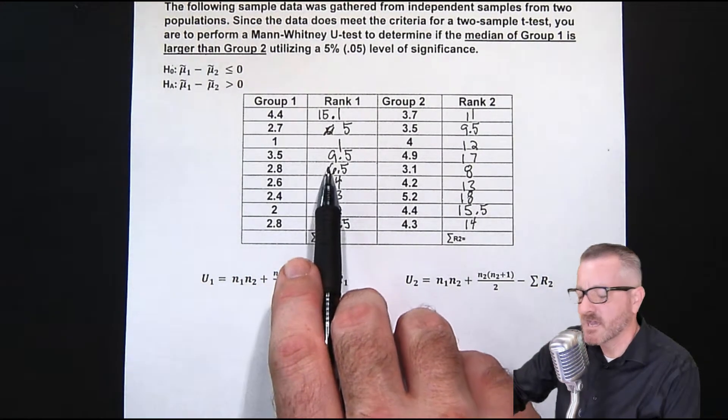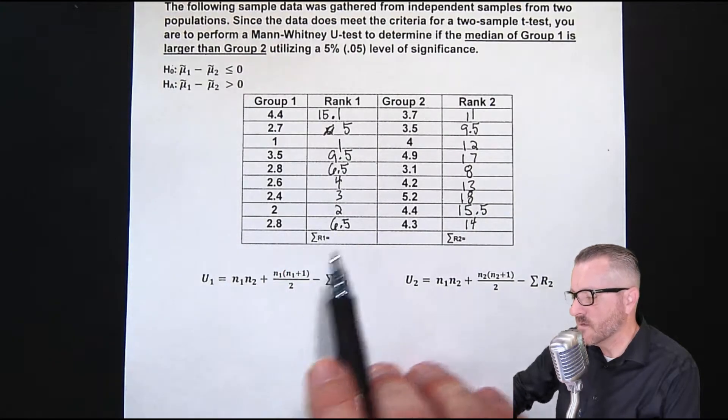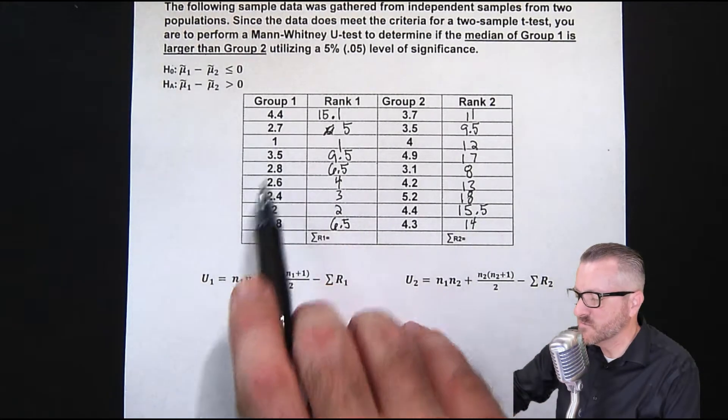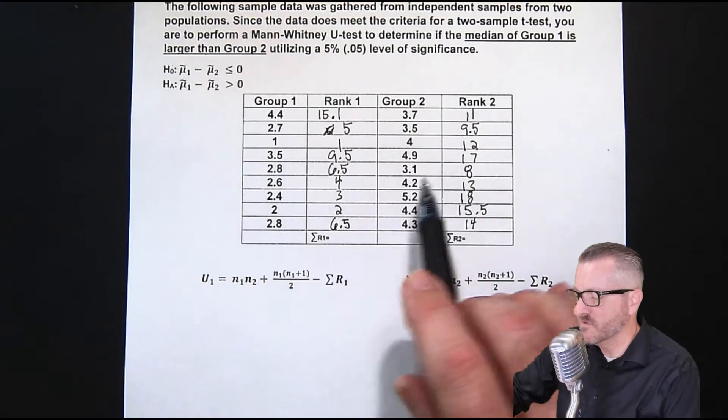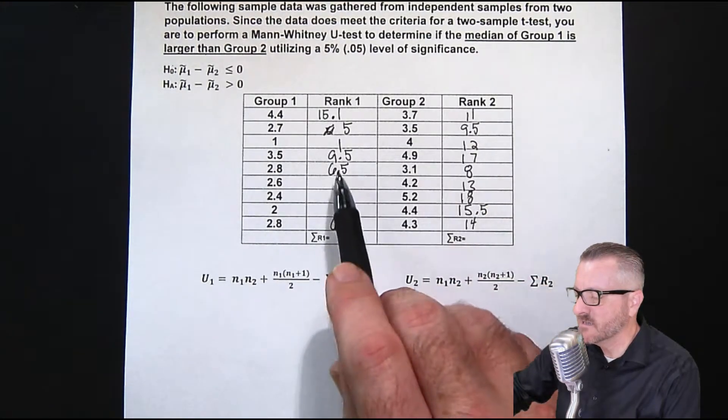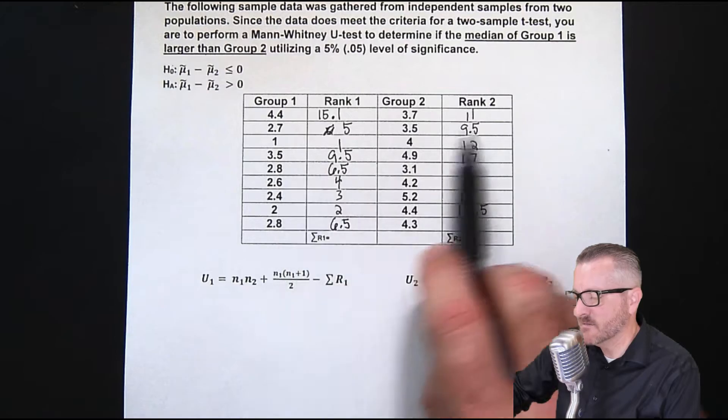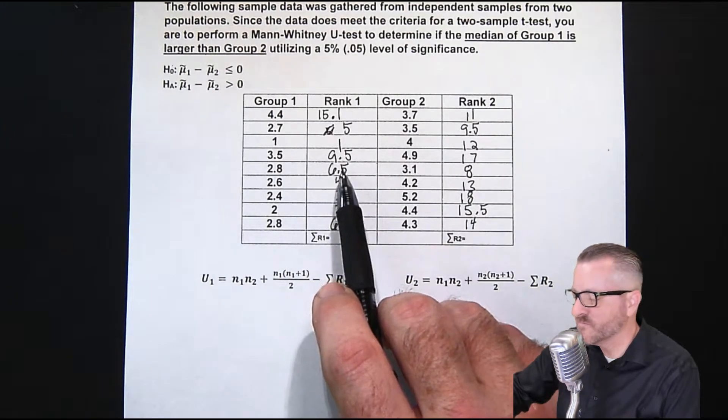Well, you have one 3.5, which would be nine. And then the next 3.5 would be 10, but that doesn't make sense. So we divide the nine and the 10 by two, and we get 9.5.